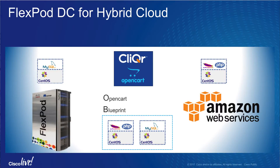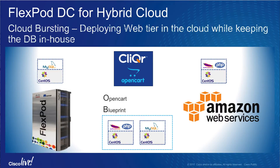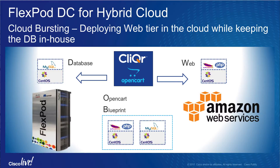Now that we have covered deploying an application in the private as well as public clouds, let's use the same application blueprint to deploy a hybrid instance. We will deploy the database VM on the FlexPod private cloud, and the web VM will be deployed on the Amazon public cloud. In this scenario, the enterprise utilizes public cloud resources for deploying web servers, while maintaining control over critical user data by keeping the database in-house.